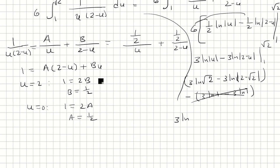So we have 3 ln, so actually we can factor out the 3 of ln of root 2 minus ln of 2 minus root 2. And these we're just going to divide just using the log property. Root 2 over 2 minus root 2.